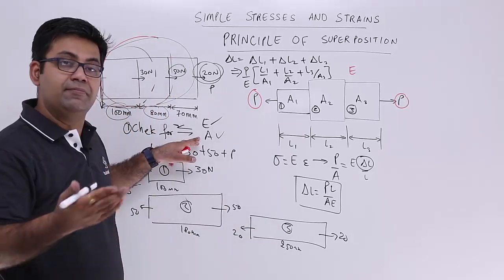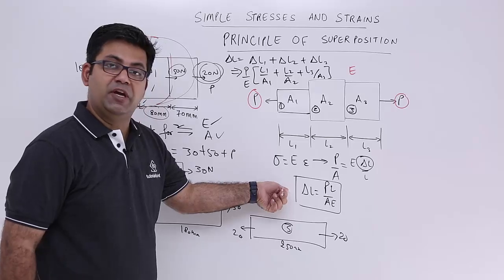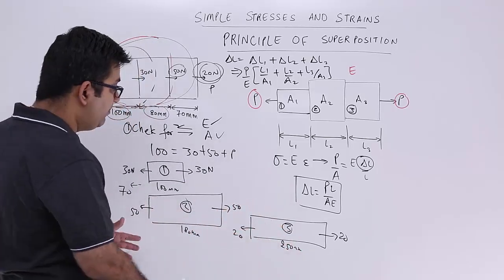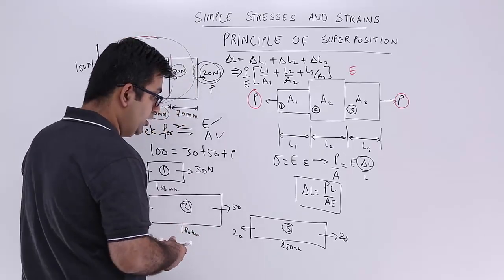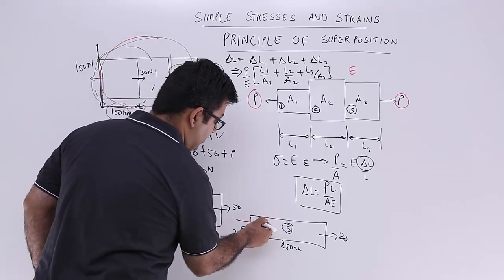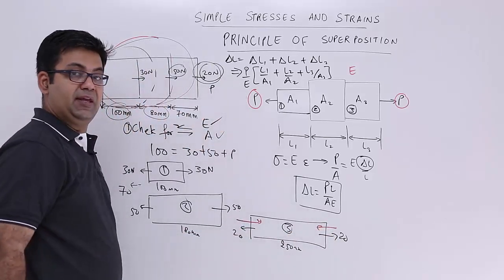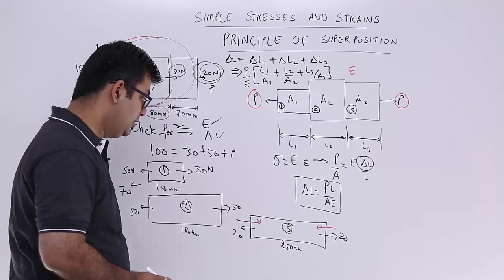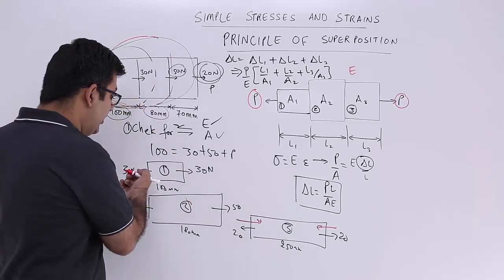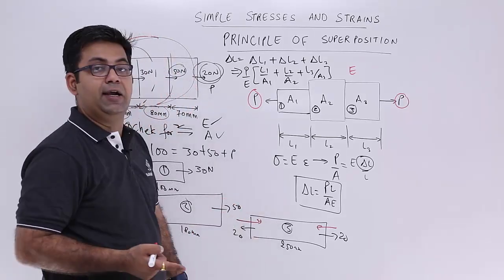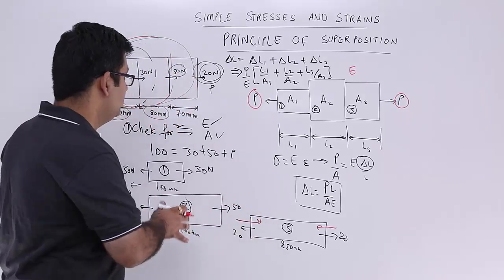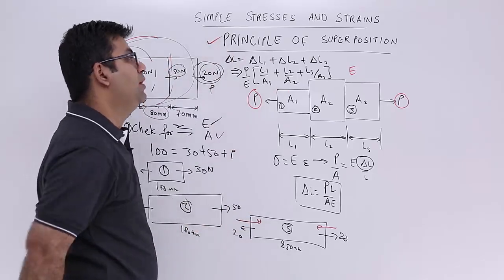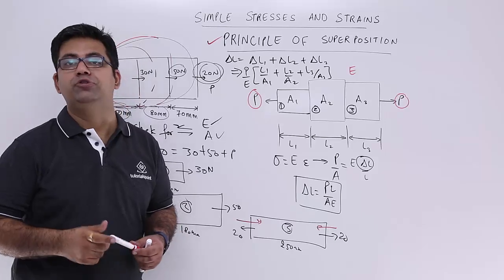The area is already same. I will apply this equation to find out the net elongation or the total elongation. There might be a case where you will have one load acting in the compressive direction. In that case you will have a contraction in this case and the elongation in the rest of the two cases. So you will have delta L1 plus delta L2 minus delta L3. So this is how you solve these kind of questions by the application of principle of superposition.